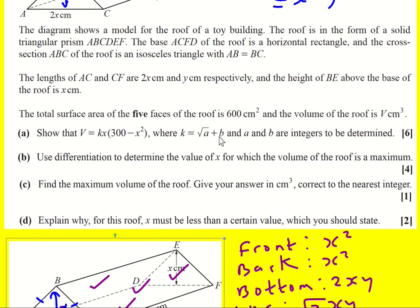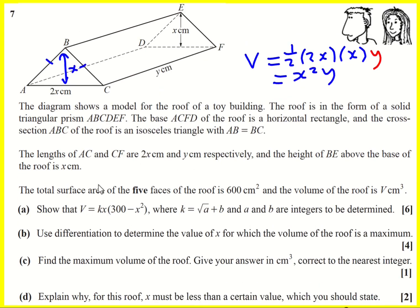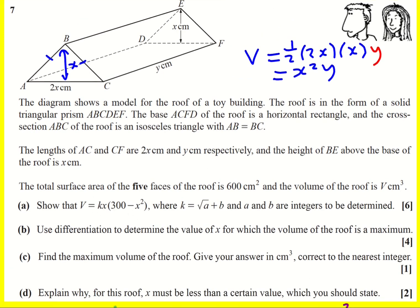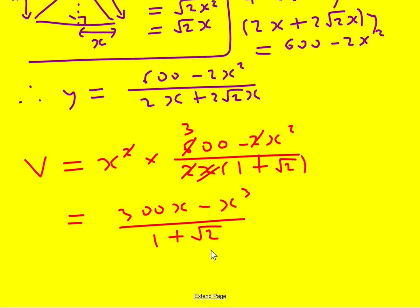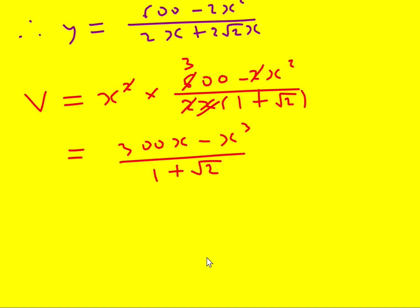This question is harsh, because if you don't work out k, then it's going to be challenging, you're going to lose marks on b, c, and d, but that's just how it is. Right, we're not quite there, so we need to show it's in the form k times 300 minus X squared. Actually we're looking pretty good. I need to factorize that X back out to make it look like the answer wants it.